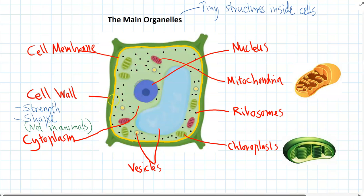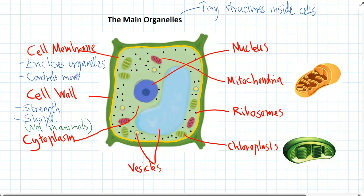The next innermost organelle is the cell membrane, which encloses all the internal organelles. It's like the plastic bag around the outside of the cell, keeping everything together. But it also controls what can go in and out — it controls the movement of substances in and out. Some substances it lets in, some it doesn't, and then it lets out particular substances too.